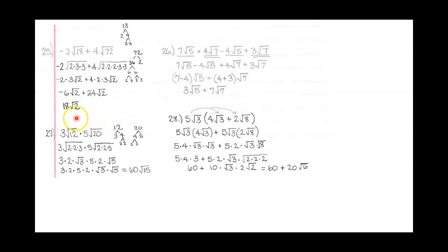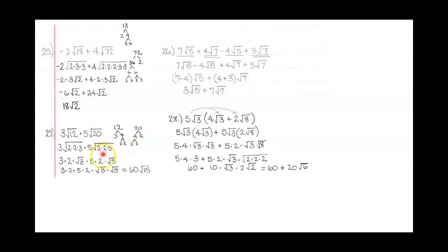Look at problem 27: we've got 3 square roots of 12 times 5 square roots of 20. Remember when we're multiplying, these do not have to be the same. Let's simplify each one. Square root of 12: 12 is 3 times 2 times 2, so we have a pair of 2s — pull out a 2, and the 3 stays underneath. So that's 2 square roots of 3. For square root of 20: 20 is 4 times 5, and 4 is 2 times 2. We have a pair of 2s — take that out. The 5 stays underneath. So that's 2 square roots of 5, making the full term 5 times 2, or 10 square roots of 5.